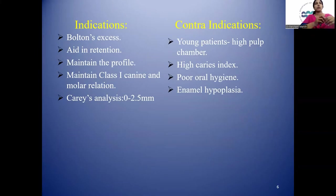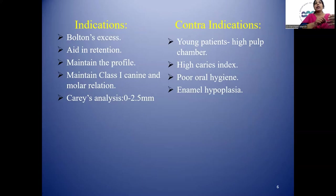The indications of proximal stripping are: Bolton's excess, aiding in retention, maintaining Class I molar relation and canine relation, and in caries analysis if the tooth material discrepancy is between 0 to 2.5 mm.